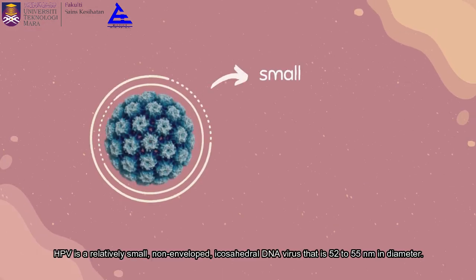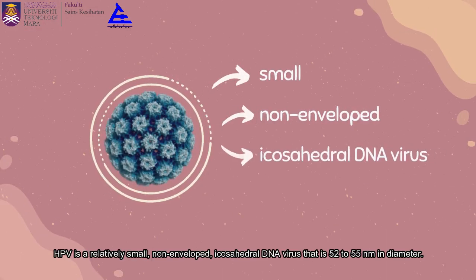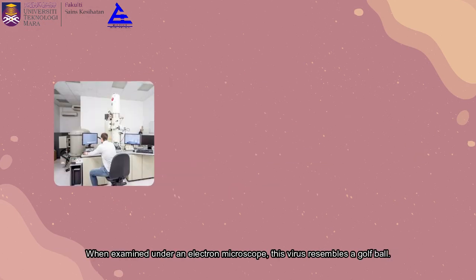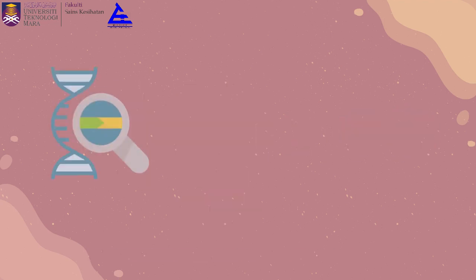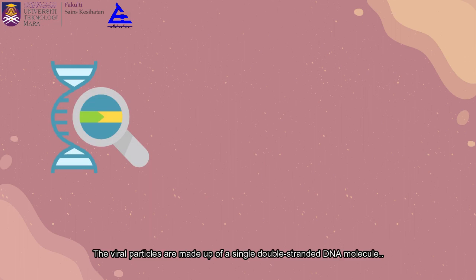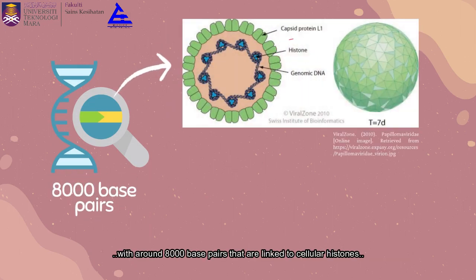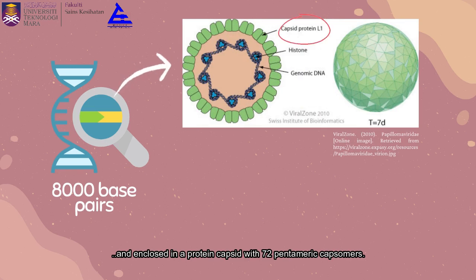HPV is a relatively small, non-enveloped icosahedral DNA virus that is 52 to 55 nanometers in diameter. When examined under an electron microscope, this virus resembles a golf ball. The viral particles are made up of a single double-stranded DNA molecule with around 8,000 base pairs that are linked to cellular histones and enclosed in a protein capsid with 72 pentameric capsomers.